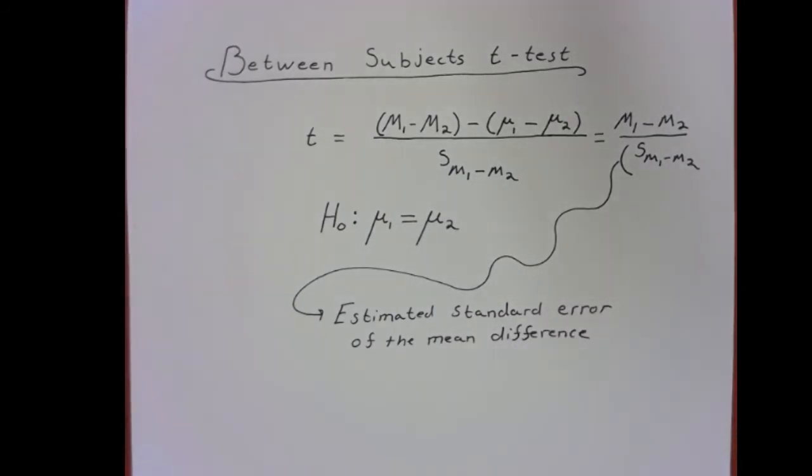lets us know how far apart, on average, we should expect these two samples to be. Now, when we break this down a little bit more and actually think about what it represents, what we're really doing is we're adding the estimated standard error from sample one and adding it with the estimated standard error for sample two. And conceptually, that's roughly how it plays out.